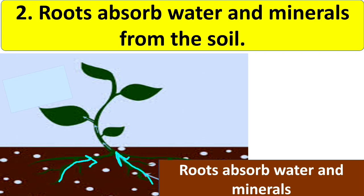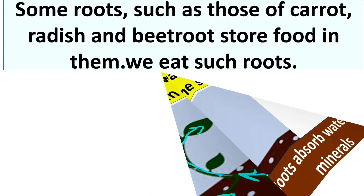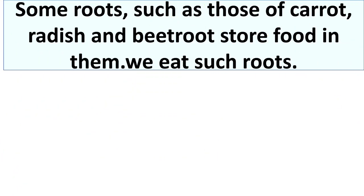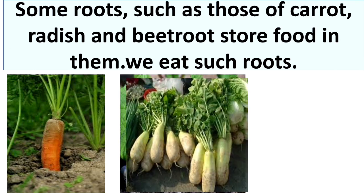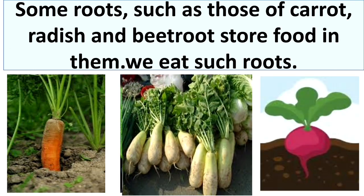The third function is that some roots, such as those of carrots, radish, and beetroot, store food in them. They are edible, which means we eat such roots as food. This was all about roots — the underground part of the plant.